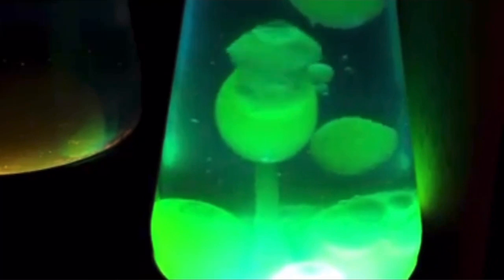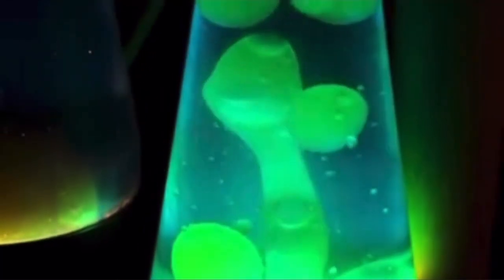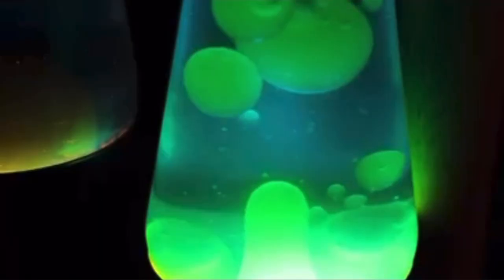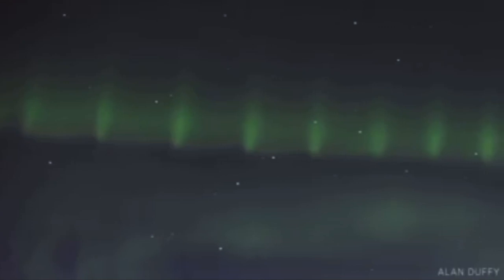Just like a lava lamp, the buoyancy between the bubbles and heavier plasma creates fingers of plasma about 2,500 miles wide that stretch down towards Earth, creating the distinct pearl necklace structure in auroral beads.